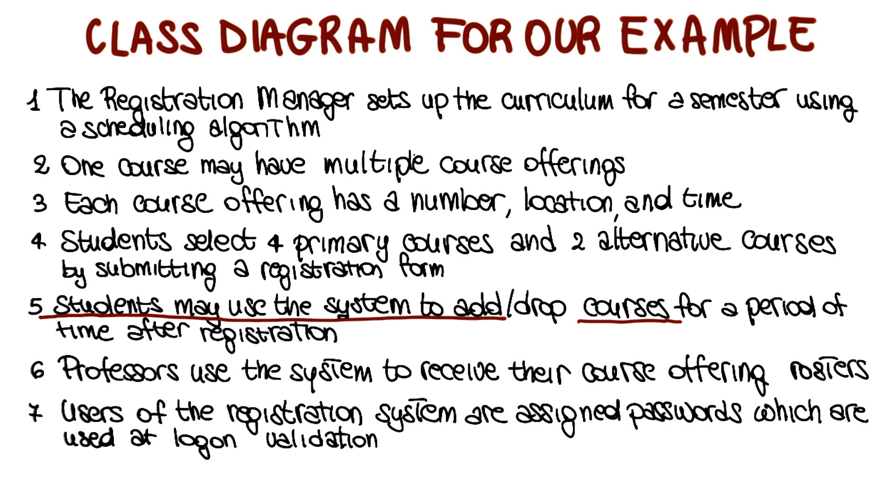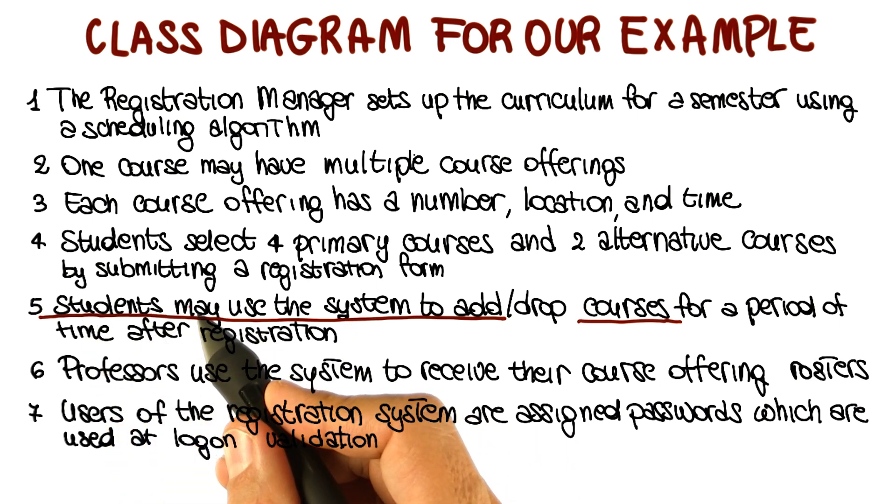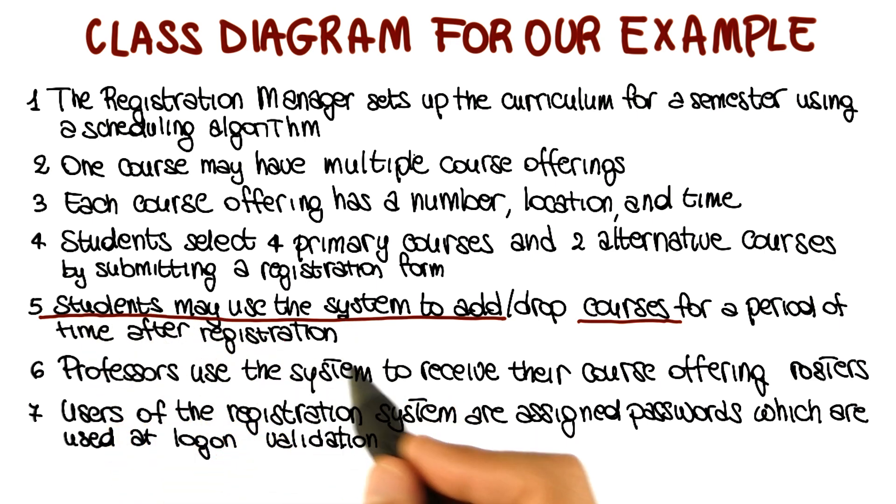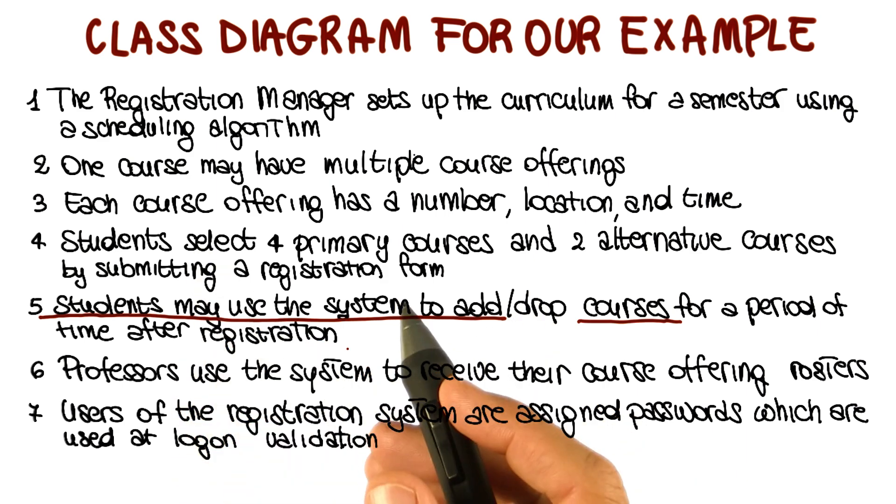So this is clearly indicating an action that the student should be able to perform. But notice that this doesn't mean that this is an operation that should be provided by the student's class. It rather means that there should be somewhere in the system the possibility of performing this operation.